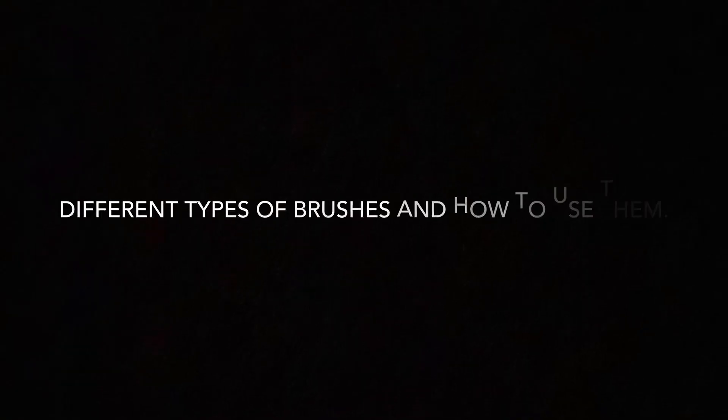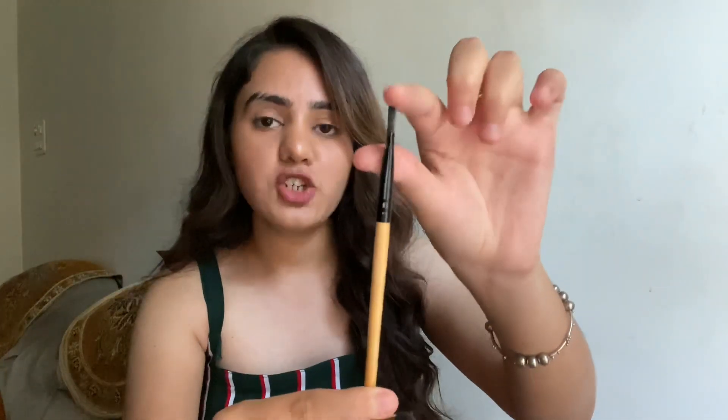Now let's talk about brushes — what kind of brushes to use. I've seen a lot of people who are new to makeup use only a pointed tip brush or a flat shader brush for their whole eye makeup. They'll grab one of these, take some eyeshadow, and apply it all over the eyelid and crease. These brushes are used in eye makeup, but not for everything — I'll show you all my eye makeup brushes and explain which to use where.